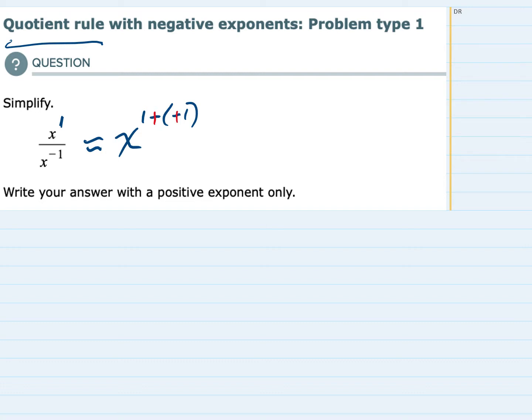So we're turning subtraction into addition here. This is going to simplify to our variable x, and we have 1 plus 1 as the exponent, which is 2.